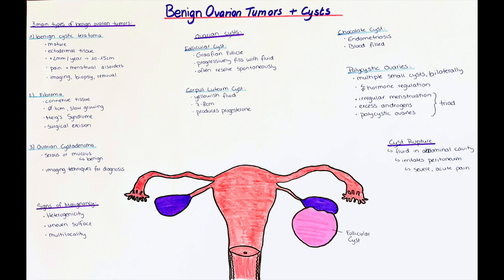The next type is the corpus luteum cyst. It forms, as the name says, from the corpus luteum, which forms after the oocyte is released from the ovary. This type can exist during the normal cycle but also during pregnancy. The fluid it contains is typically yellowish in color and these cysts usually do not exceed 7 to 8 cm in size. Corpus luteum cysts synthesize progesterone and lead to amenorrhea and inhibition of further ovulations. If a corpus luteum cyst is detected during early pregnancy, it should not be removed, as a sudden change in progesterone levels could lead to a spontaneous termination of the pregnancy.